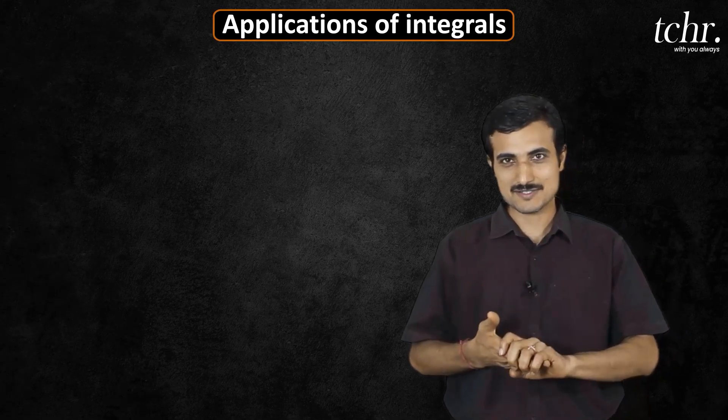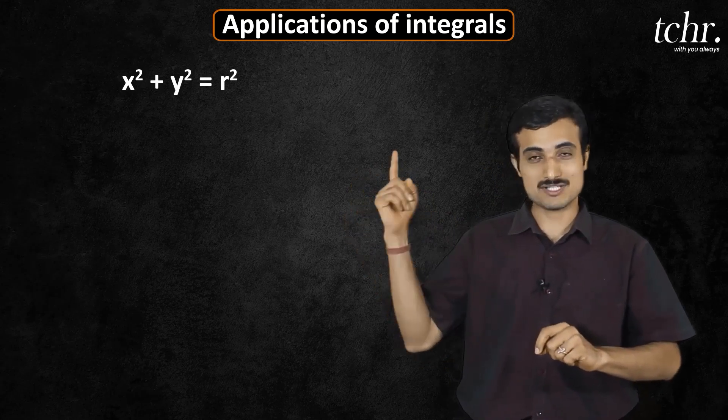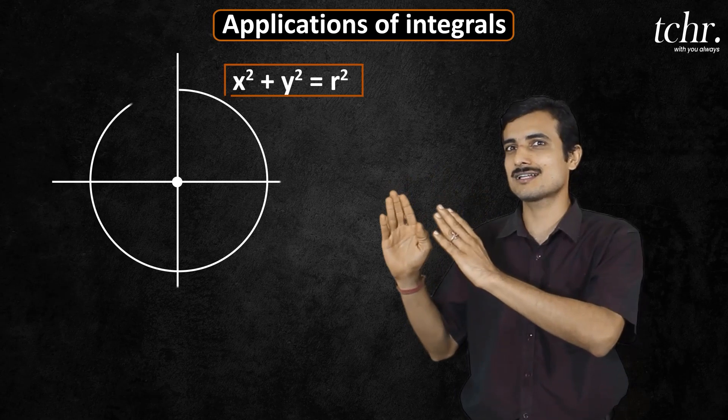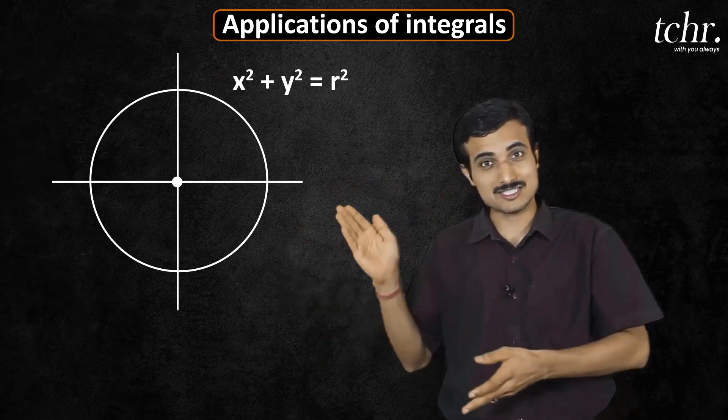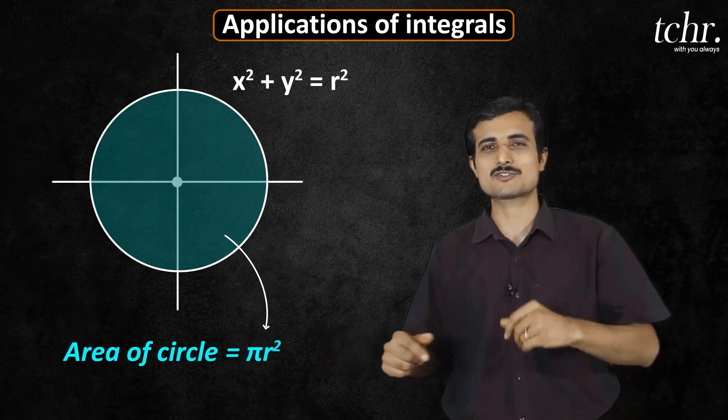Applications of integrals, first important rule: x square plus y square equal to r square, equation of a circle center at origin. So, circle center at origin, how do you find the area of the circle? It's simply pi r square.